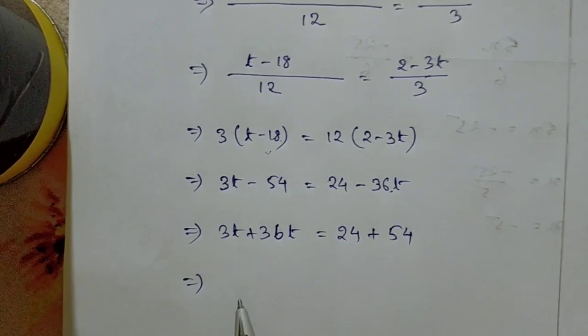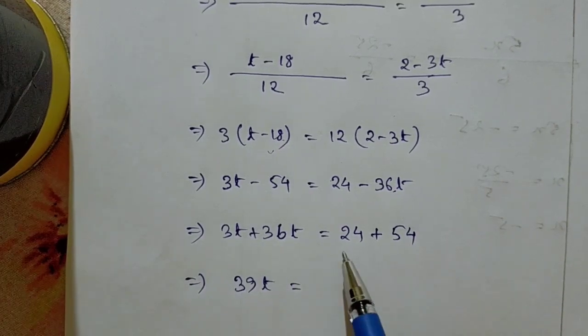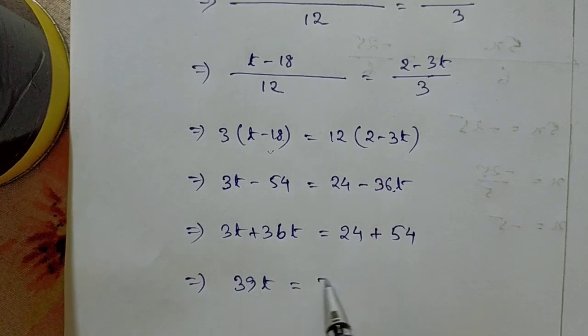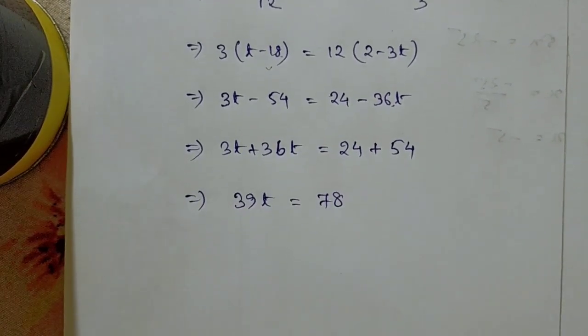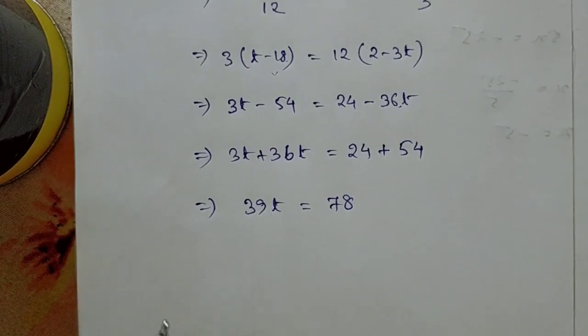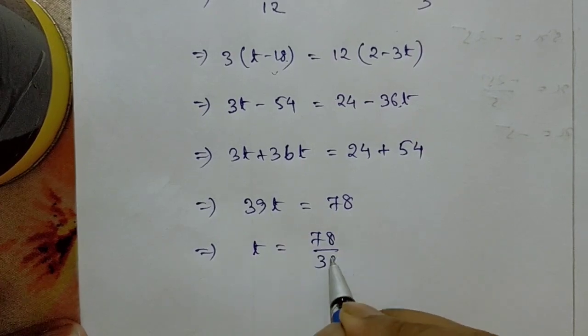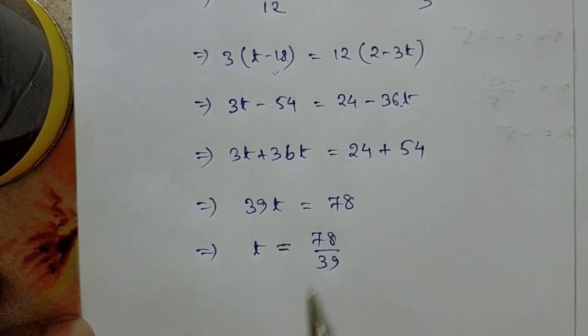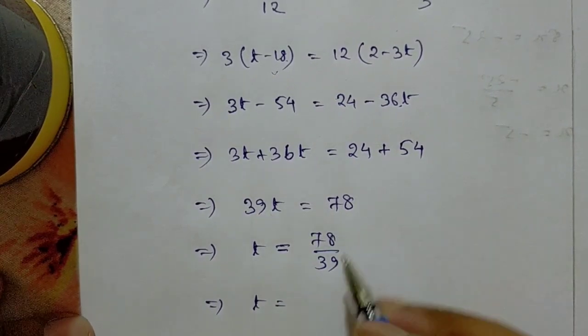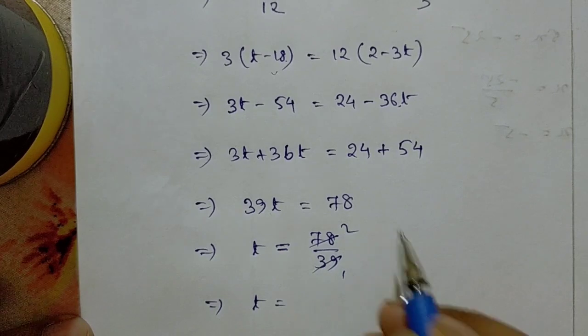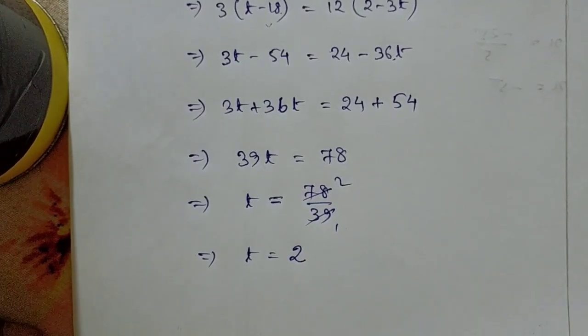39t equals 78. Our t will be 78 upon 39. You can see that 39 times 2 is 78, so our t is 2.